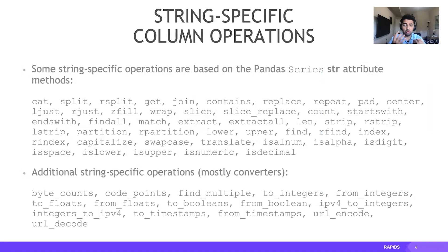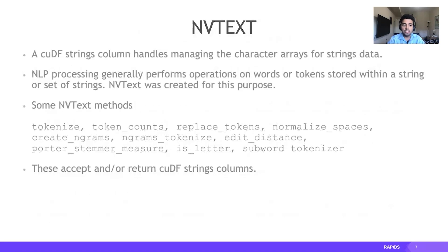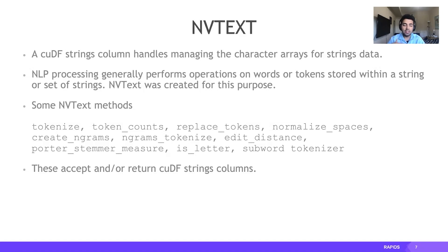We have very wide coverage with string operations matching Pandas, including concatenation, split, rsplit, length, and also a lot of converters that allow you to go from one data type to another with strings. Apart from Pandas-like string functions, we also have functions under NVText. A lot of times text processing deals with tokens or words rather than strings, and we provide common functions like tokenize, token counts, replace token, normalize spaces, ngram generation, and subword tokenization — all of which accept and return string cuDF columns.